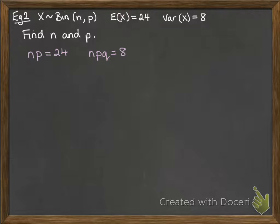So we know that the expectation of X is n times p, so np equals 24. And variance is npq, so that equals 8. Now, we can replace np with 24 in the second equation. And we can divide that through, so we get q is a third.